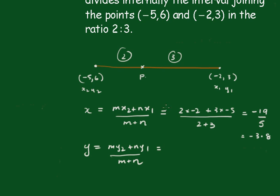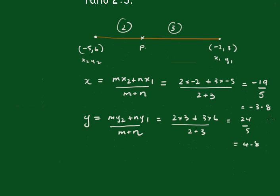Which equals, and this will be the 2 times the 3, plus the 3 times the 6 over 2 plus 3. And that gives me 24 on 5, which is 4.8. So the coordinates are (-3.8, 4.8).